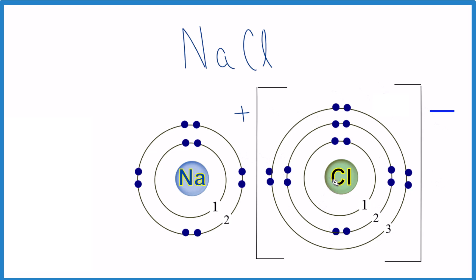So that's it. NaCl is an ionic bond because it's made of a metal and a nonmetal. This is Dr. B. Thanks for watching.